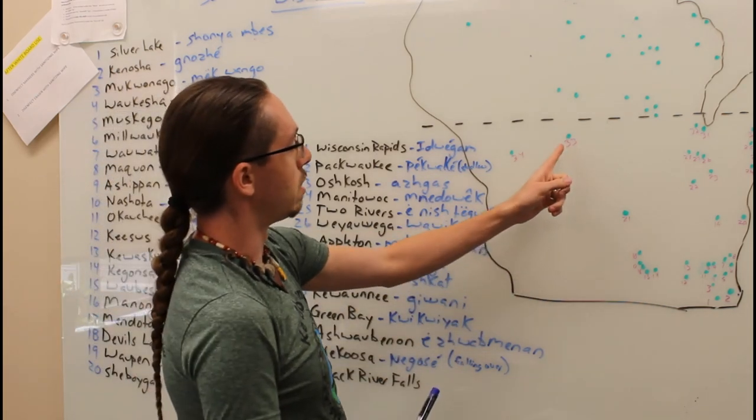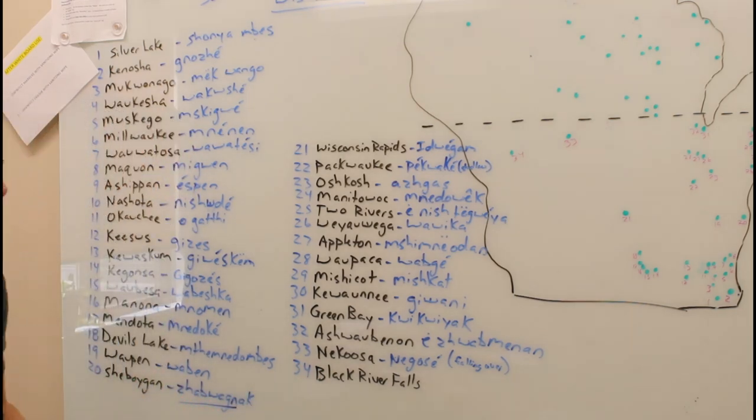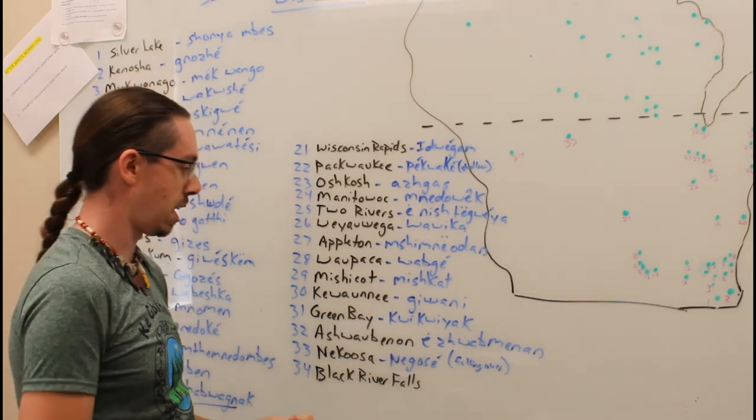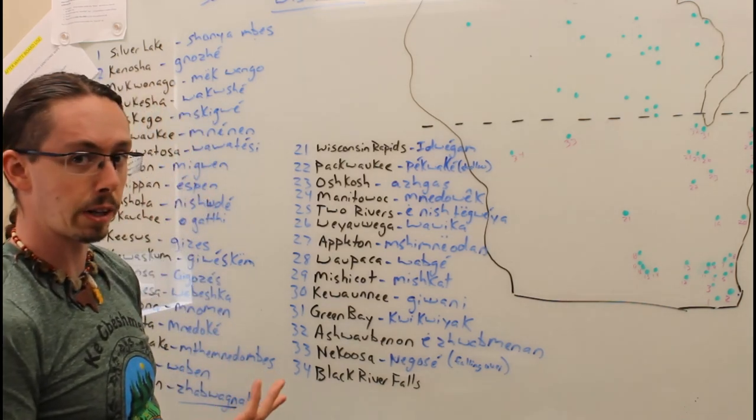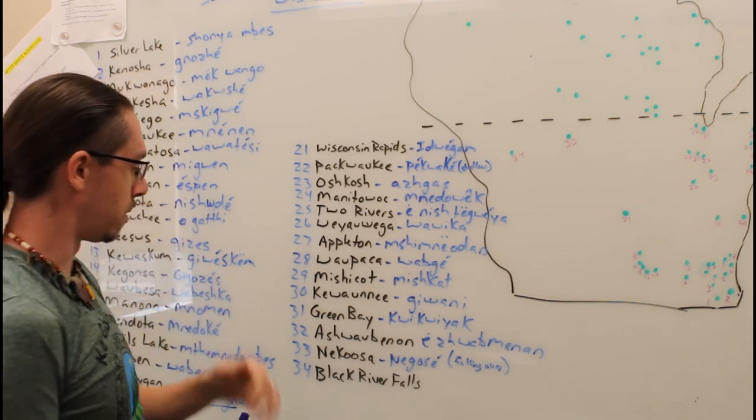Moving over here in the middle now, we have Nekoosa, Wisconsin. This comes from Nogosa. It describes falling over, that's the translation I got from that one.